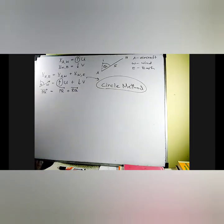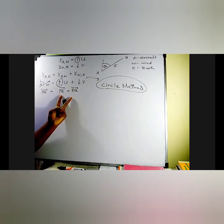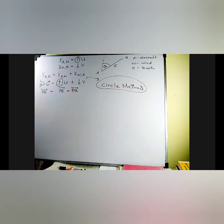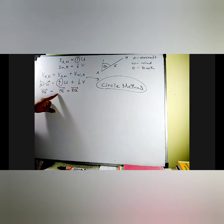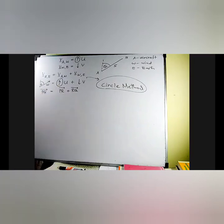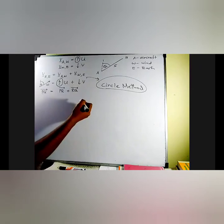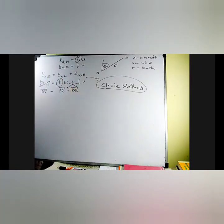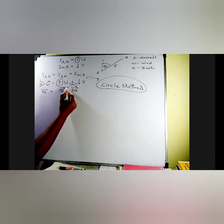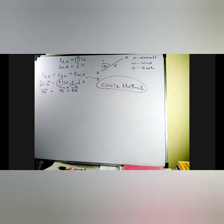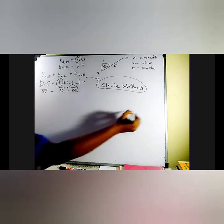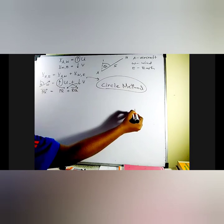Listen carefully. The first step is to interchange the two vectors representing the two velocities. Because the direction of the first vector PR is unknown, I have to draw the vector whose direction is known first. Therefore, v represents PR and u represents RQ. That is the first step in the circle method. Now we draw PR representing v downwards.